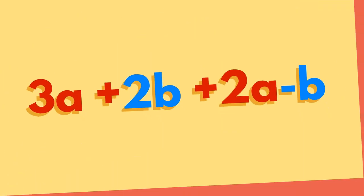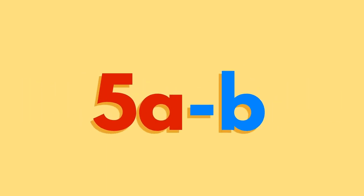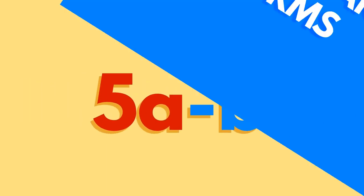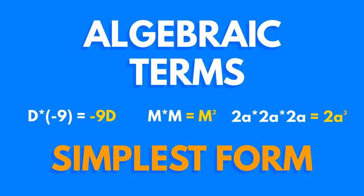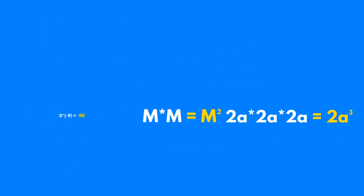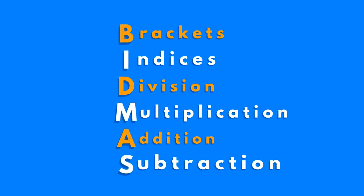Here's an example. This can be simplified down to 5a minus b. Algebraic terms should always be written in their simplest form. We can use the acronym BODMAS to help us remember the order in which operations should be performed.